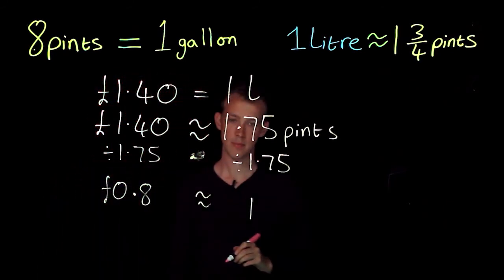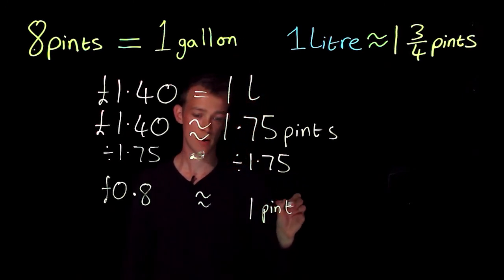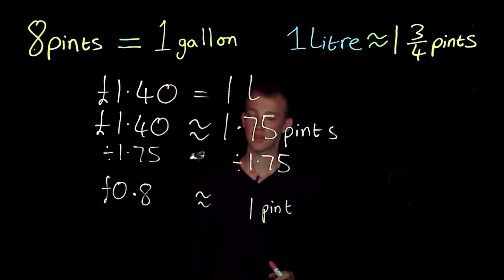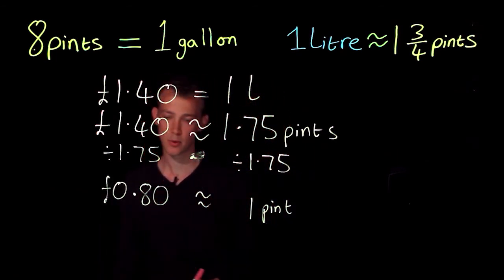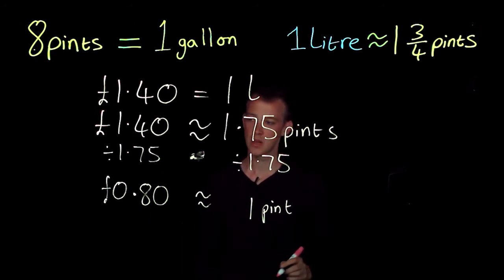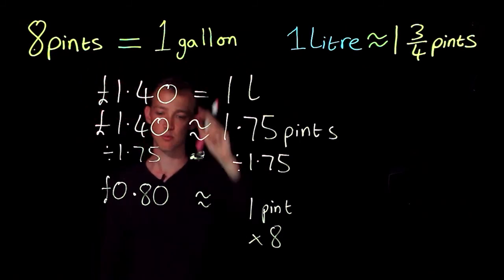Okay, and that's in pounds, and I've got my one here, one pint. So I've worked out that one pint of the petrol is approximately equal to 80p or 0.8 pounds. I'm still trying to find my gallon, so I'm going to multiply both sides by eight because I know that eight pints is one gallon.